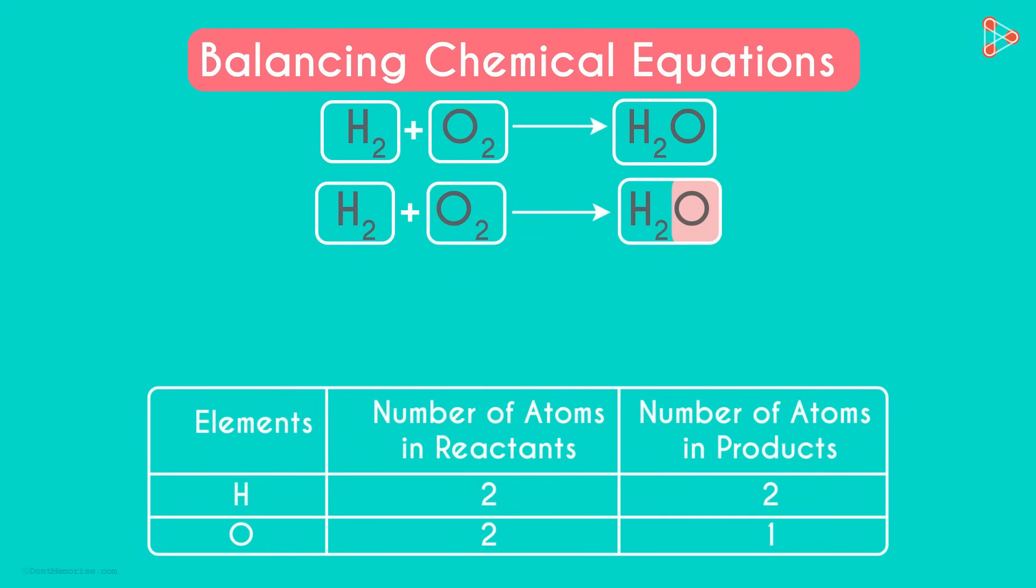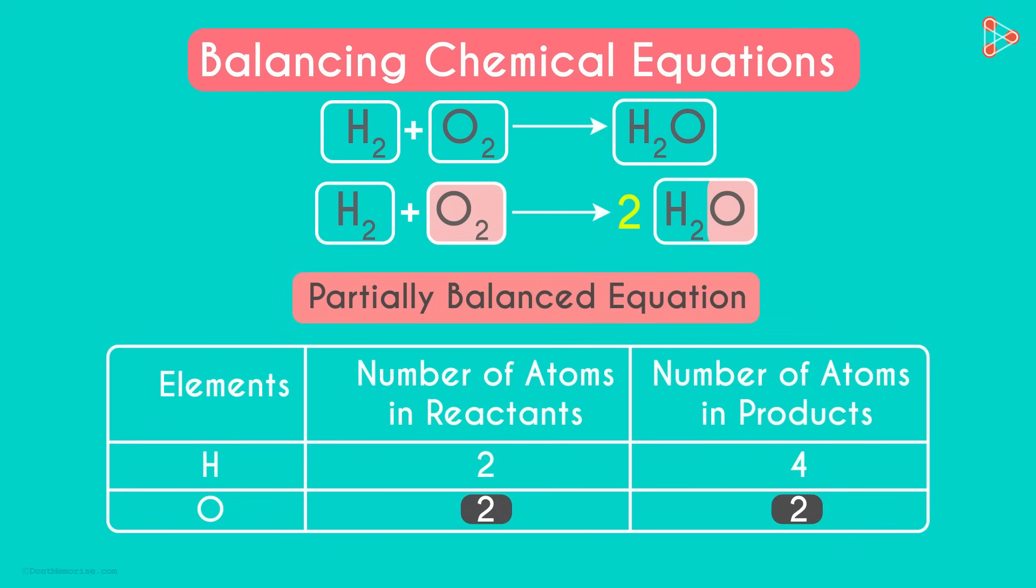As there's one oxygen atom on the right and two on the left, we multiply H₂O with 2. What we have here is the partially balanced equation. The number of oxygen atoms on the right is 2 and that on the left is also 2.